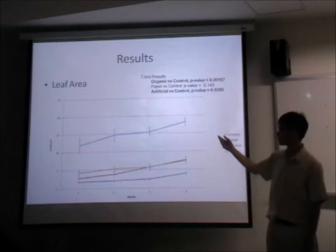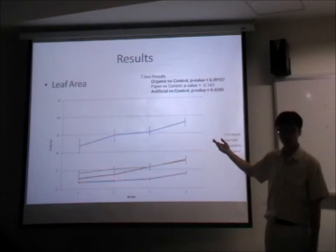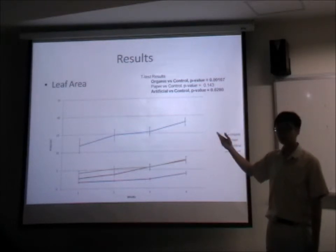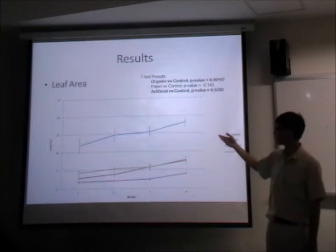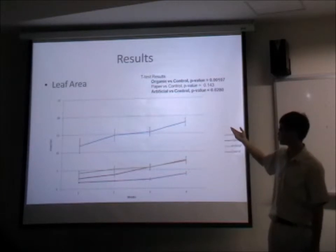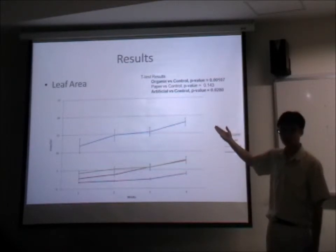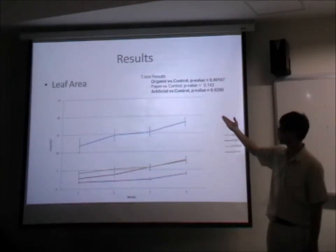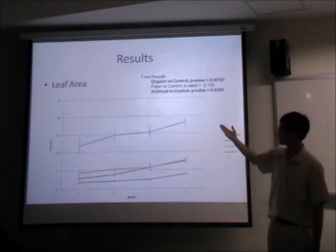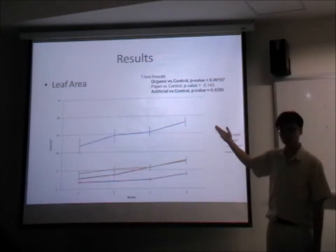For the leaf area results, plants fertilized with vermicompost from organic waste have a much greater leaf area compared to all other setups. The t-test results for leaf area show that both organic versus control and artificial versus control p-values are statistically significant.